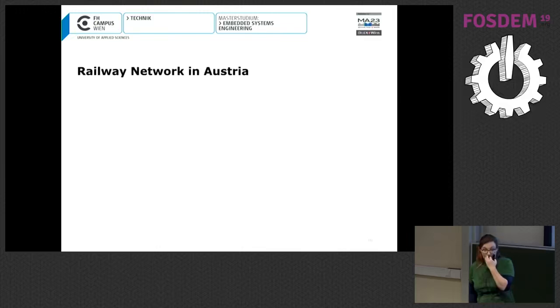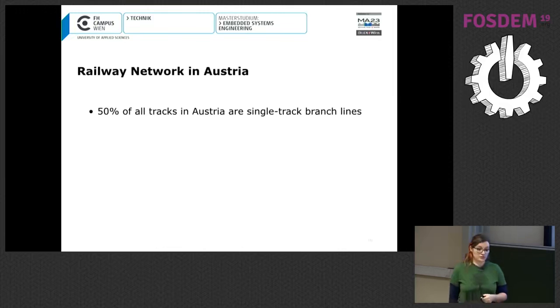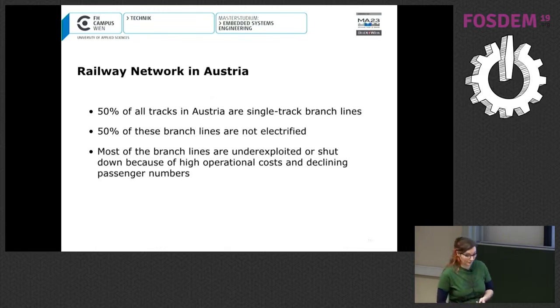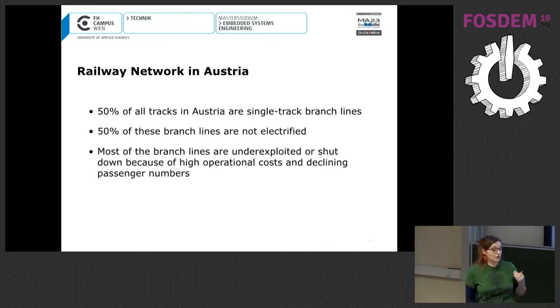The railway network, the actual situation in Austria is that 50% of all tracks in Austria are single track branch lines. 50% of these branch lines are not electrified. And most of these branch lines are underexploited or shut down because of high operational costs and declining passenger numbers. So we need a new solution. We are searching for a new solution and we hope our project will be the new solution.